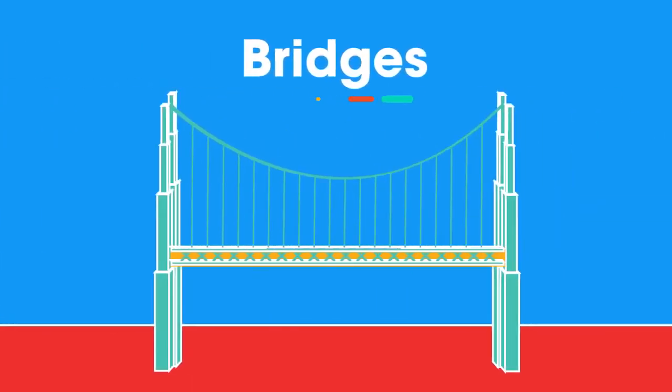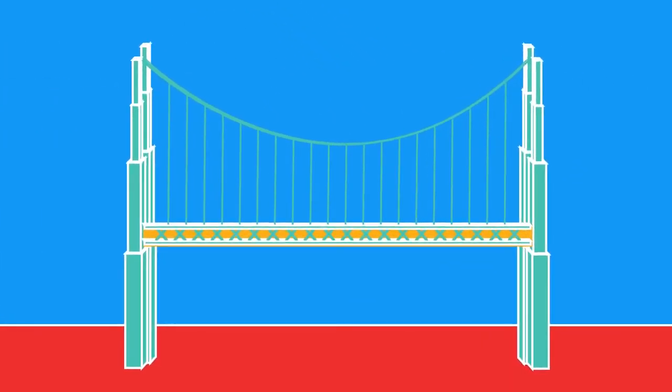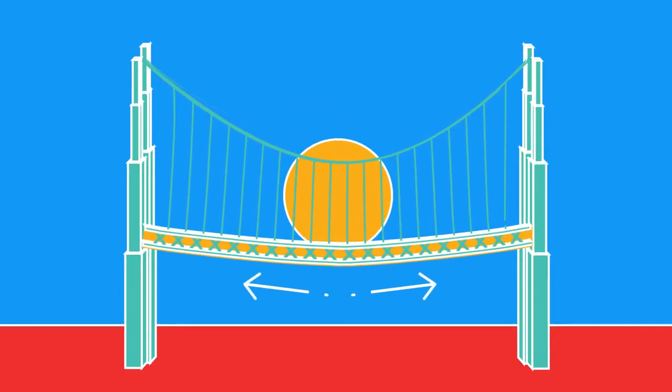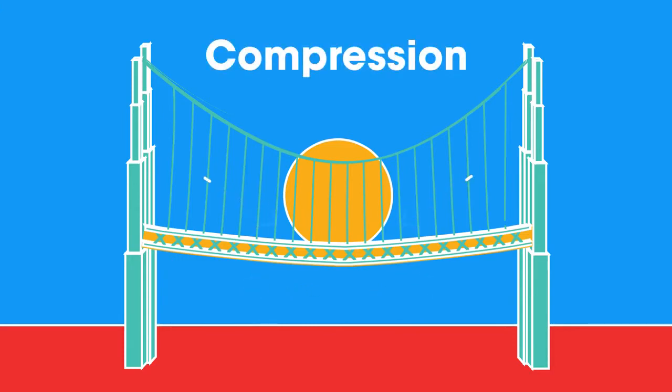Some objects, like bridges, will also behave like springs. When a weight is placed on a bridge, parts will be stretched and under tension. Other parts will be squashed together or compressed.